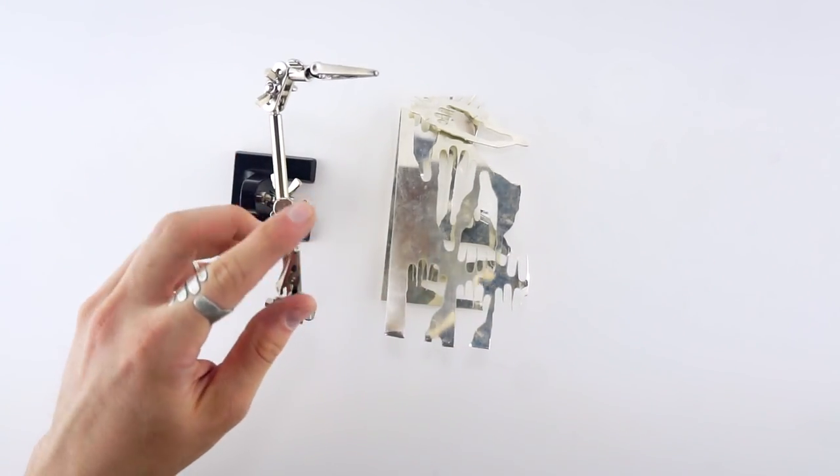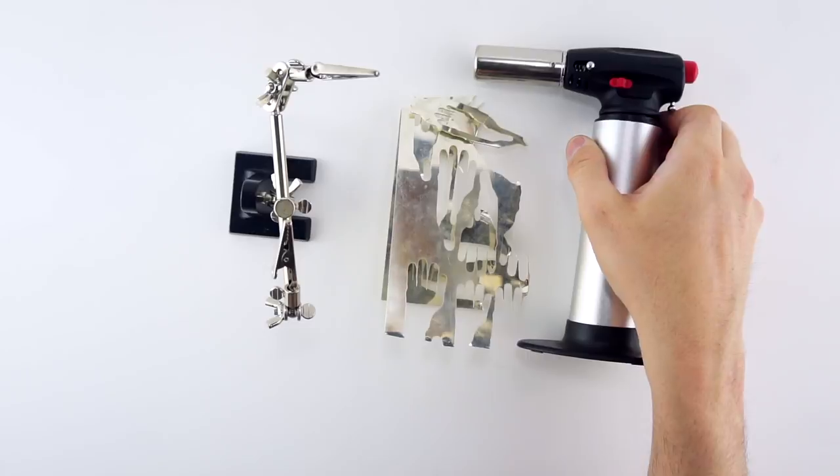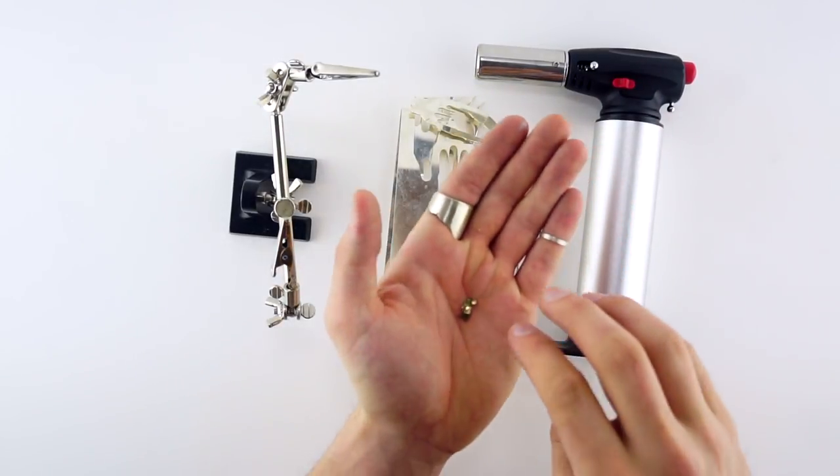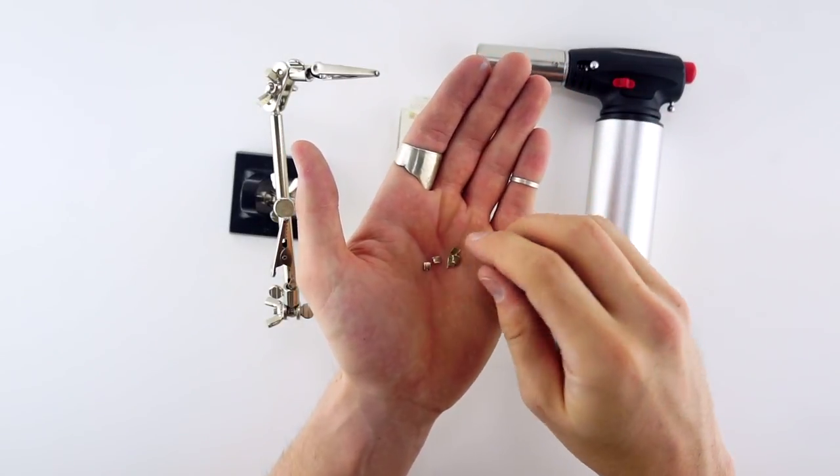So I tried to find most of the material from home, but there's some stuff I did buy like these little arms, the silver, a blowtorch, and some silver soldering.